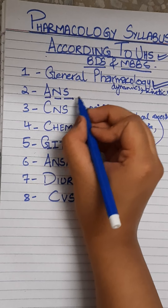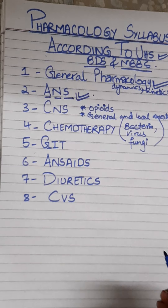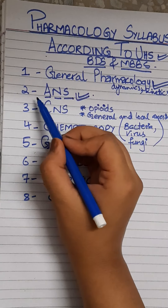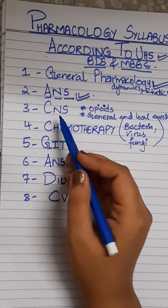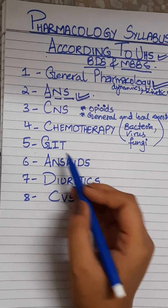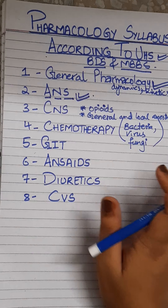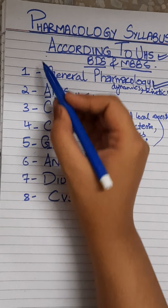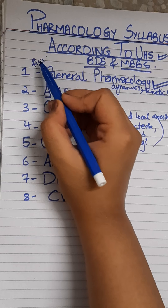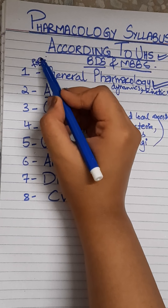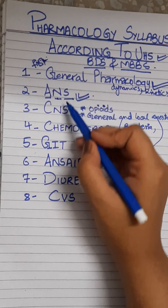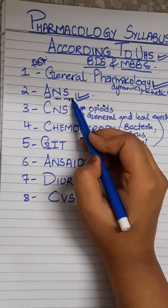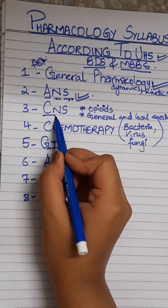After general pharmacology comes the autonomic nervous system. ANS is the second most important topic, and without studying it you cannot cover CNS, GIT, or anything else. So you have to do them in this order: general pharmacology first, then autonomic nervous system.